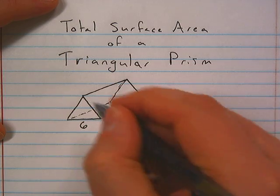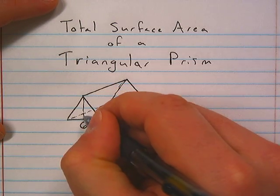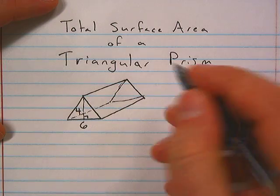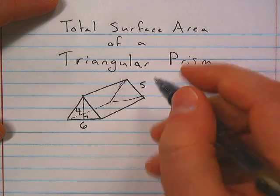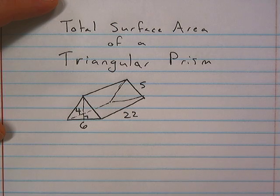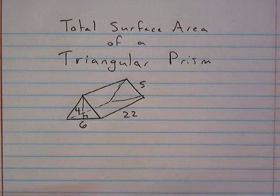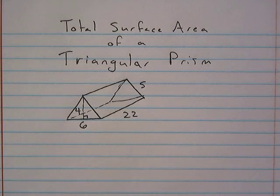So we'll do 6, I'm gonna say this line there 4, back here is 5, and then we'll make this 22. So when we're asking for the total surface area, we're asking for just the outside of a three-dimensional shape.